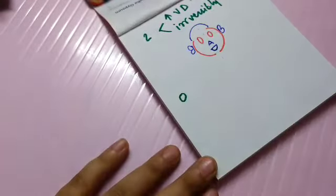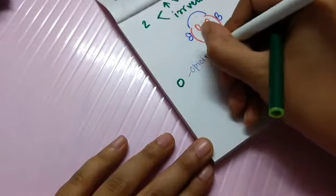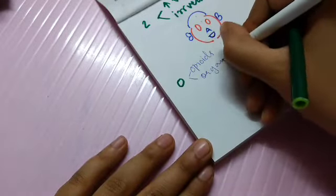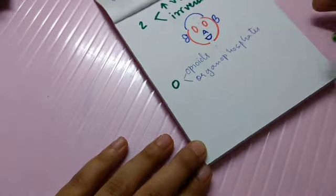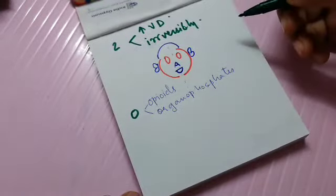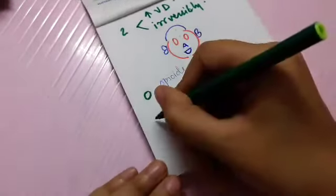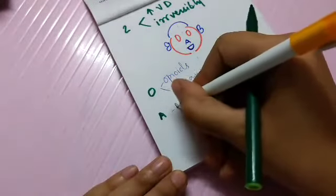For O, there are opioids and organophosphates. So these are the O drugs. Then we come down to A. So for A, the drug is amphetamines.